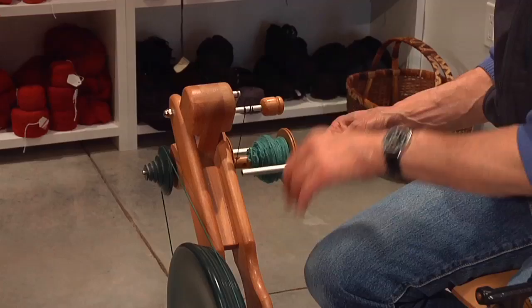Once I have the balls of yarn, I will take the three singles I want to use to create the color I want and ply them together on the spinning wheel.